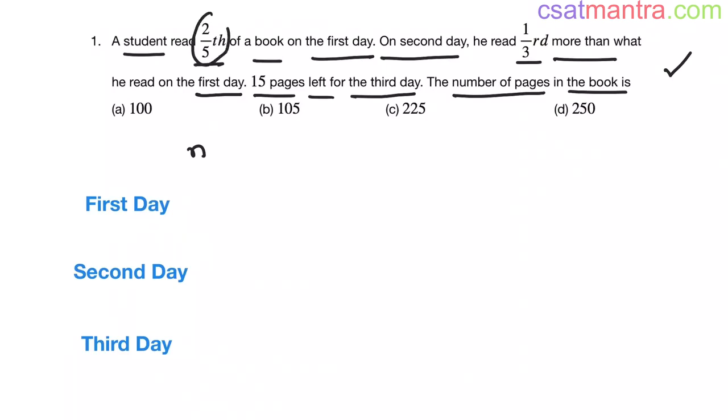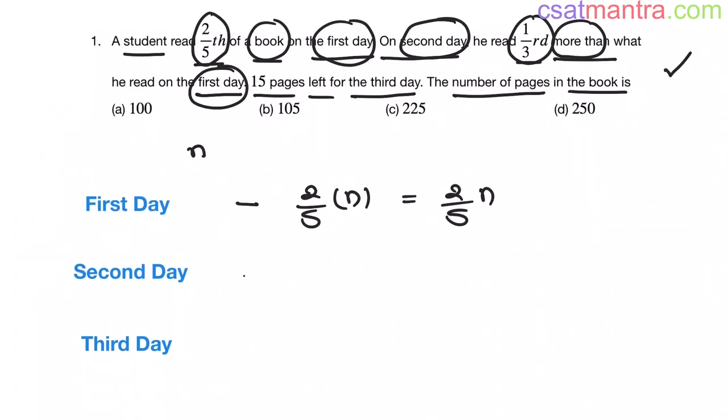Now, a student read 2/5th of a book on the first day. Book is number of pages my friends. So, 2/5th of n total number of pages is n. So, this is 2/5 n pages. Now, on second day, he read 1/3rd more than what he read on the first day. On first day, he read 2/5 n pages. This is more than means plus my friends, 1/3rd of the first day that is 1/3rd of 2/5 n pages my friends. Clear right?